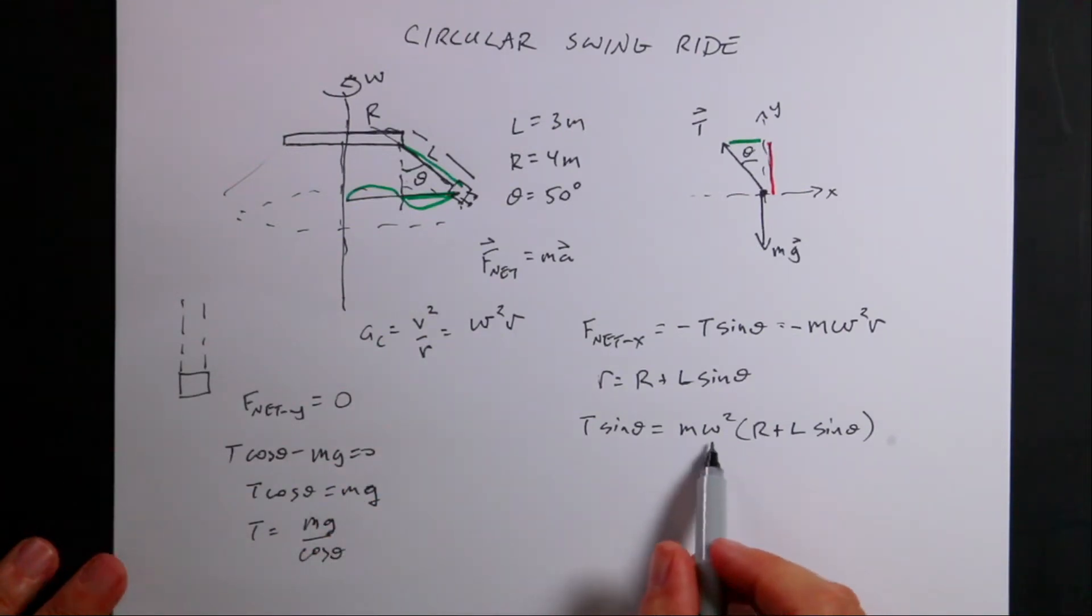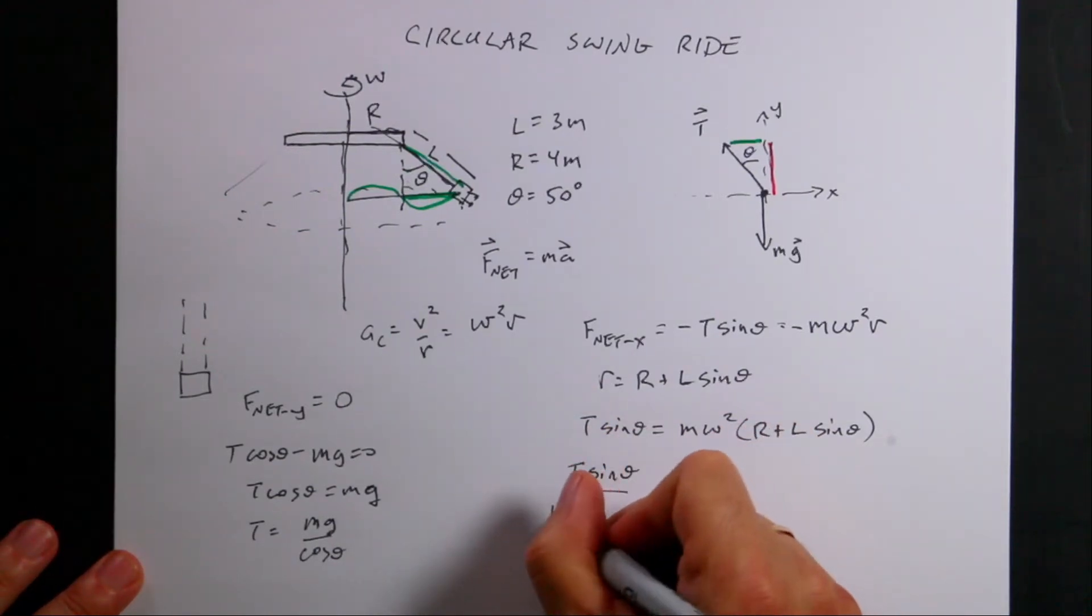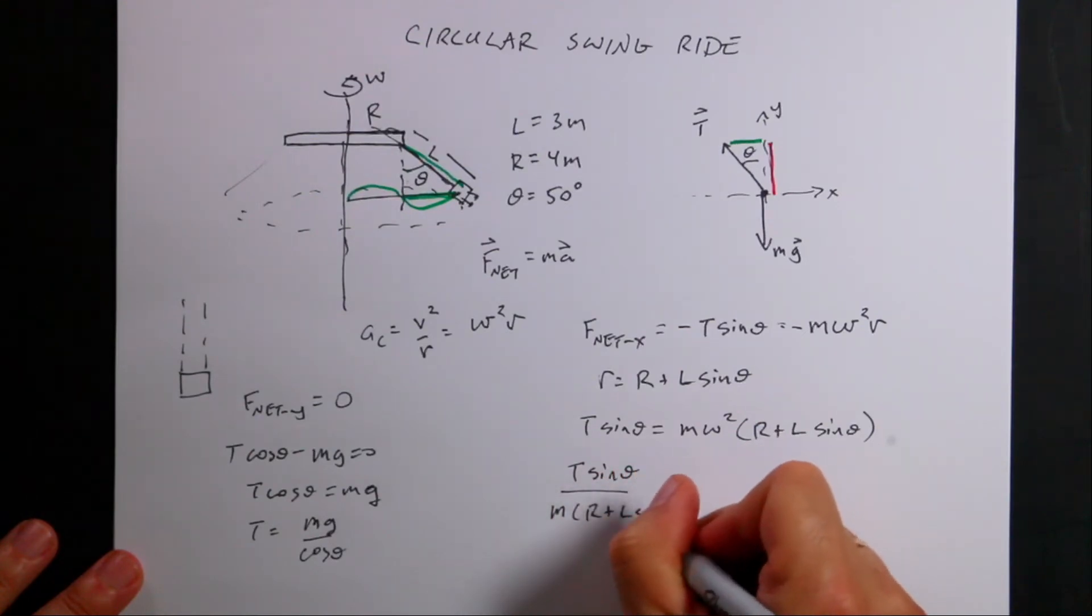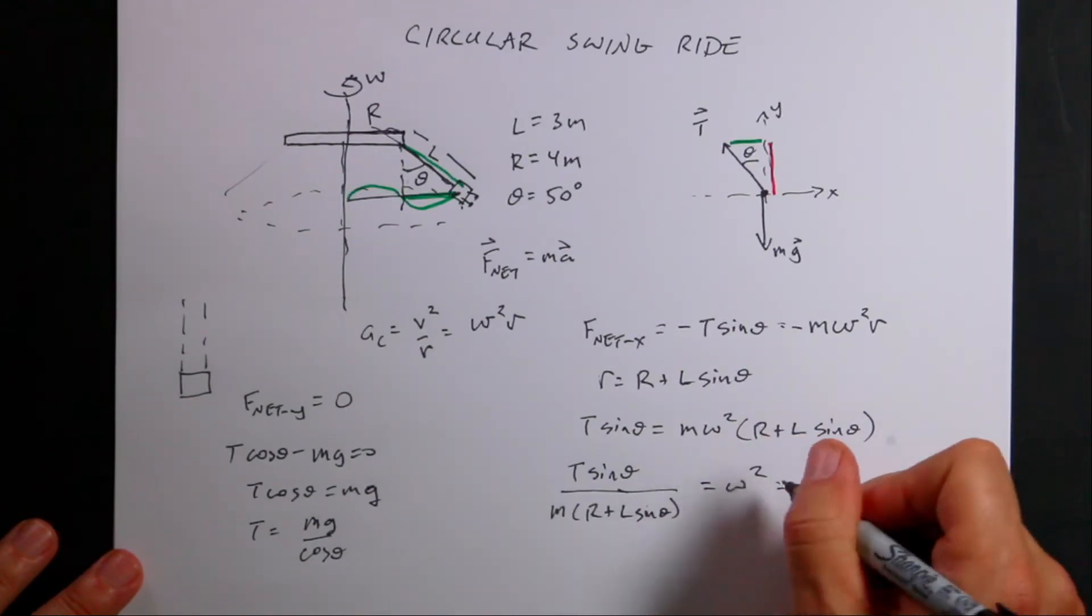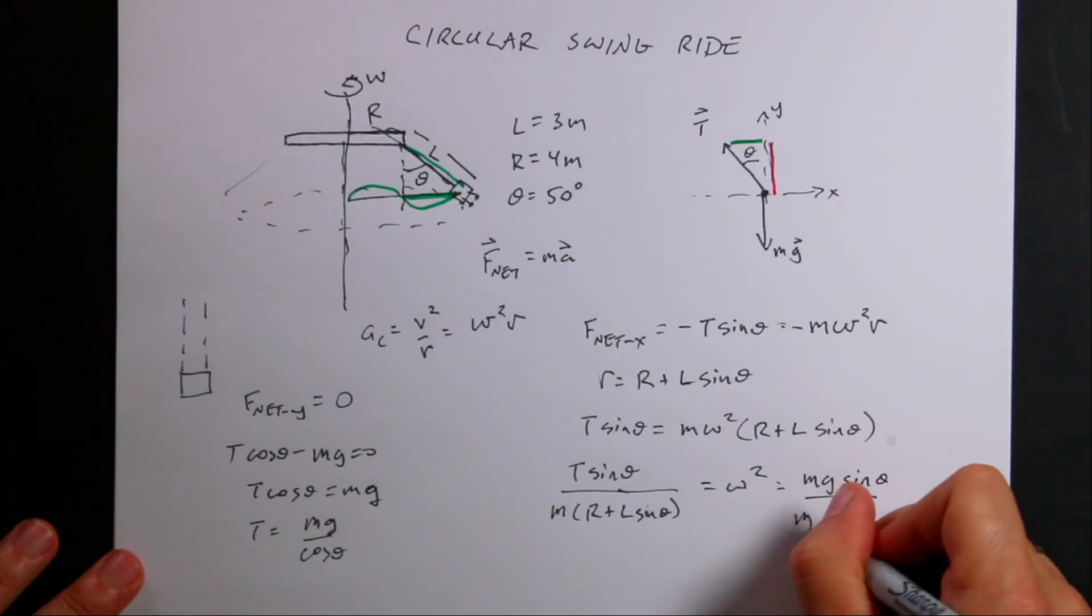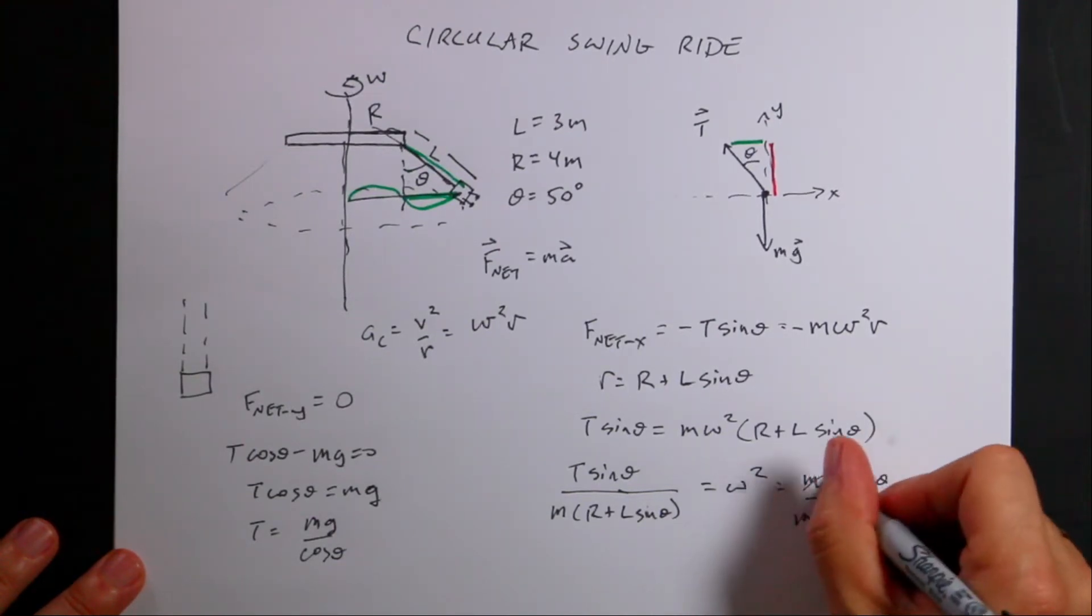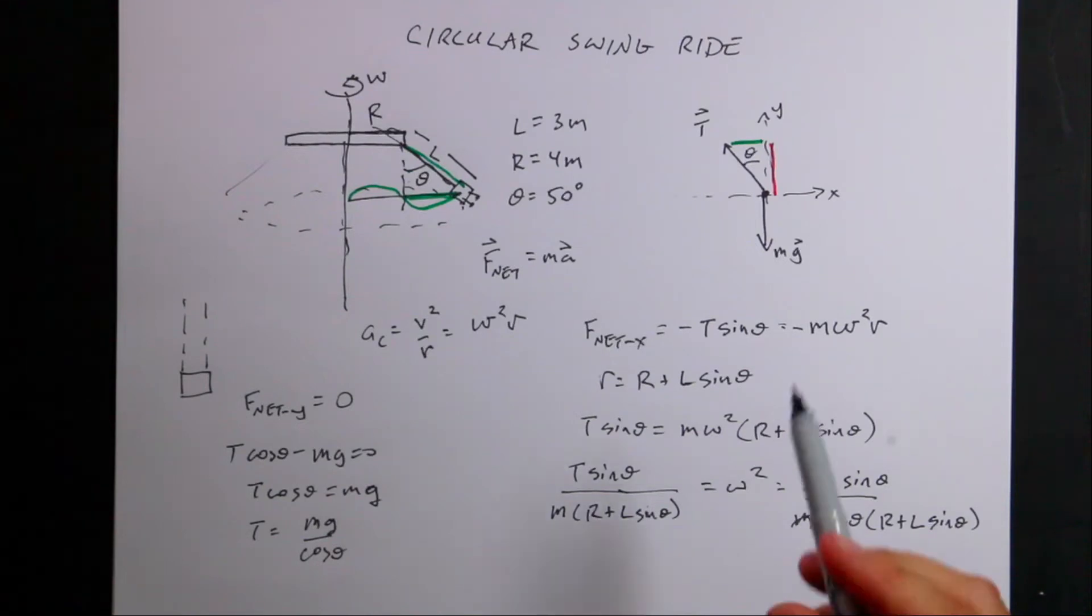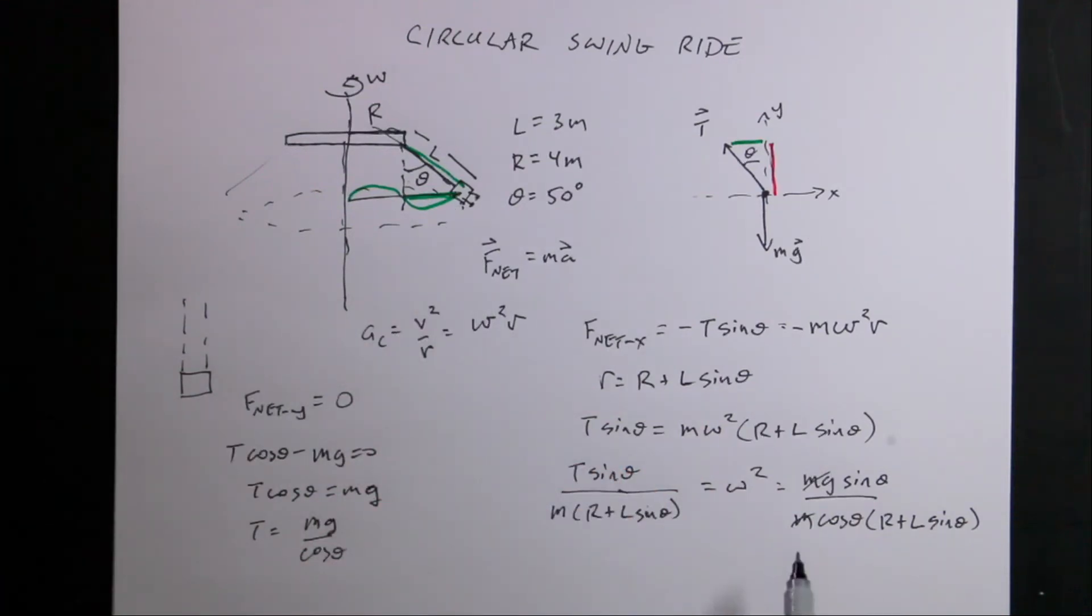Now I can plug this in. Solving for ω, divide both sides by m(R + L sin θ). So T sin θ / [m(R + L sin θ)] = ω². Substituting for T: ω² = [mg sin θ] / [m cos θ (R + L sin θ)]. The masses cancel, which is nice - the swing shouldn't depend on the person's mass. Taking the square root of both sides.